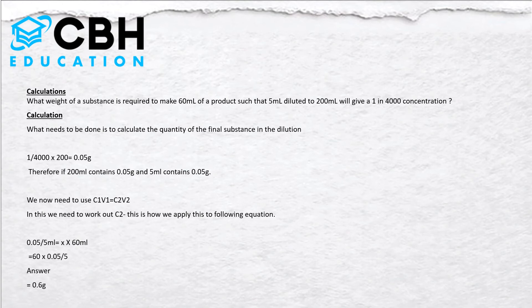We now need to use C1 V1 equals C2 V2. In this equation we need to work out C2. So it's 0.05 divided by 5 equals x times 60. Rearranging the equation, the answer is 0.6 grams.